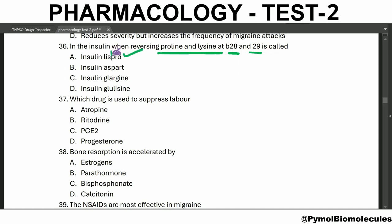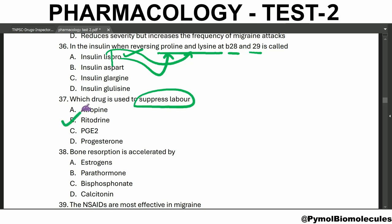In insulin, reversing proline and lysine at positions B28 and B29 is called insulin Lispro — Lis for lysine and Pro for proline — the swapping of positions 28 and 29 in the B chain. Which drug is used to suppress labor? It is ritodrine — the adrenergic tocolytic.